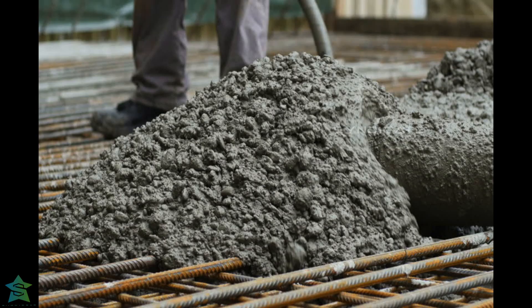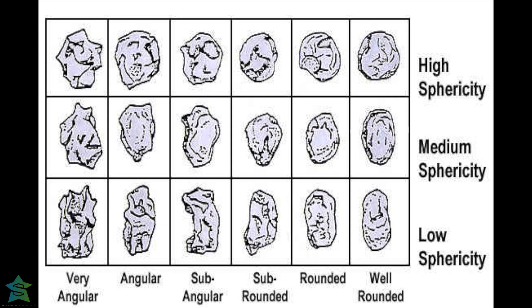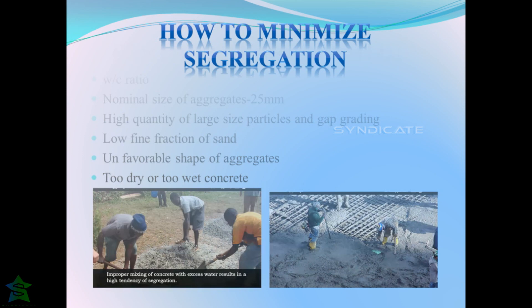The nominal size of aggregates must be 25 mm. The higher the size of aggregates, the higher will be the tendency to segregation. Segregation is also caused due to the use of low fine fractions of sand and low cement content. Unfavorable shape of aggregates also influences segregation of concrete.